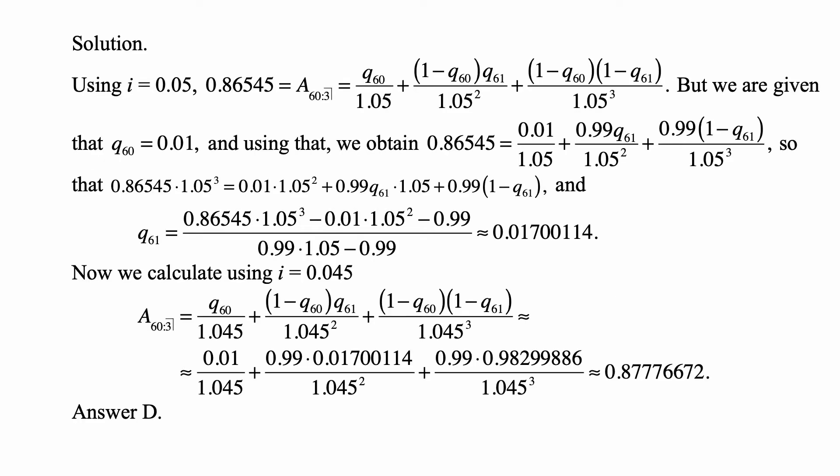Here's the solution. Using i equal to 0.05, A60 colon angle 3, which we know to be 0.86545, equals Q60 over 1.05 plus (1 minus Q60) times Q61 over 1.05 squared plus (1 minus Q60) times (1 minus Q61) over 1.05 cubed. Because note that this is an endowment insurance,